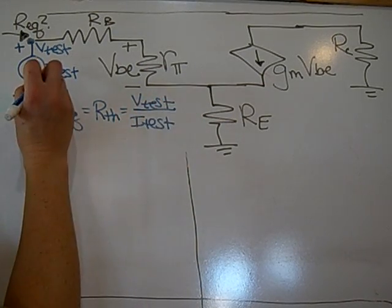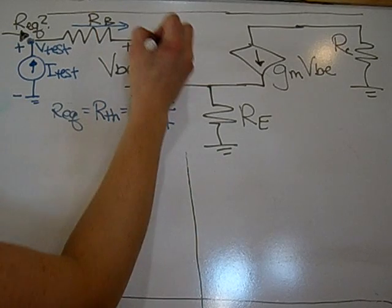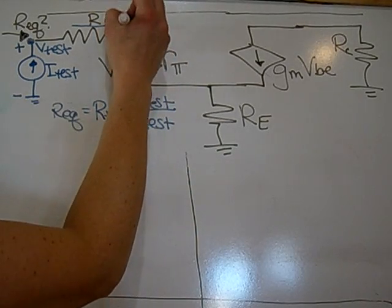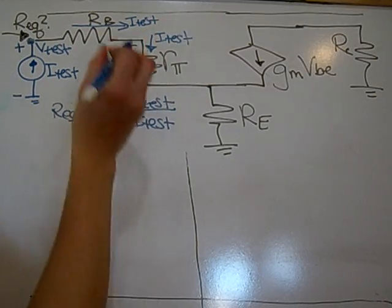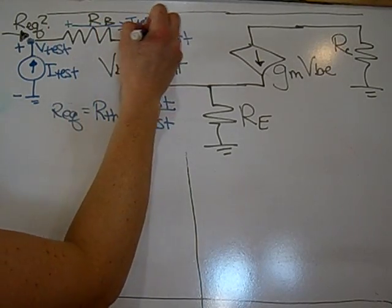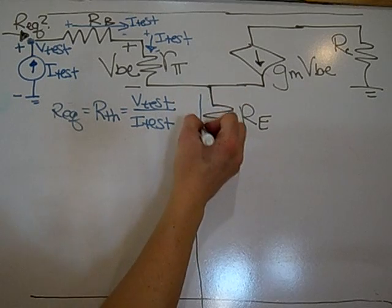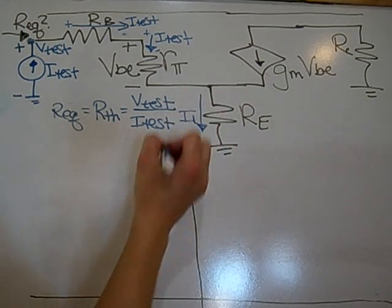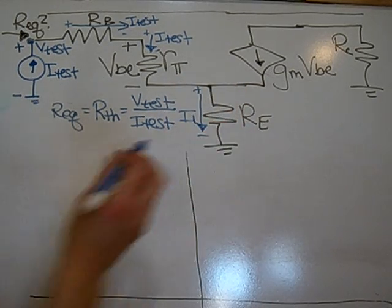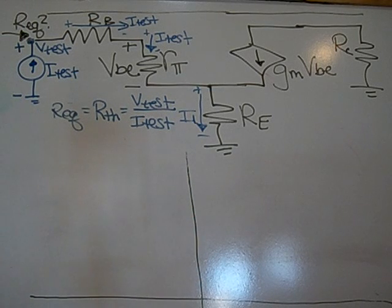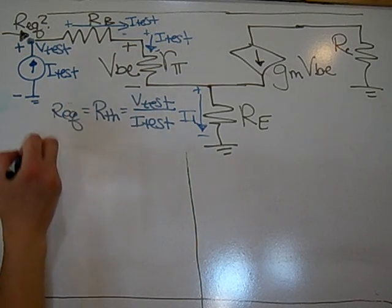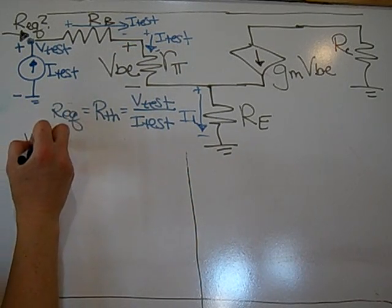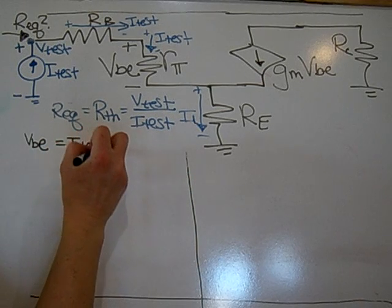By placing in this current source, I know the current through here and through here will both be I-test. And this is plus to minus, plus to minus. This is an unknown current, so I'm going to call it I-1, which is a plus to minus. Note that with I-test going through here, V-be will be equal to I-test times R-pi.